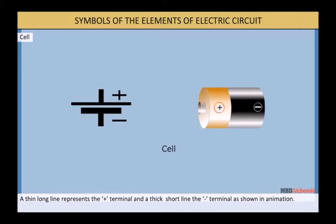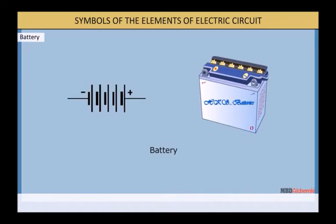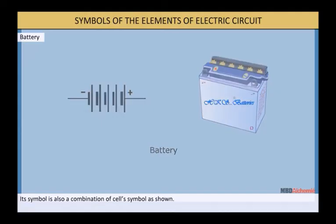Cell: A thin long line represents the positive terminal and a thick short line represents the negative terminal as shown. Battery: A combination of two or more cells is called a battery. Its symbol is also a combination of cell symbols as shown.